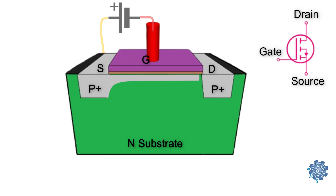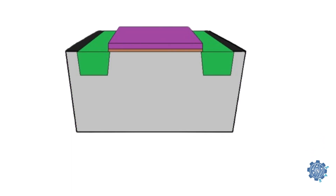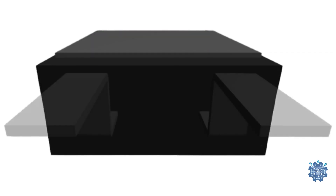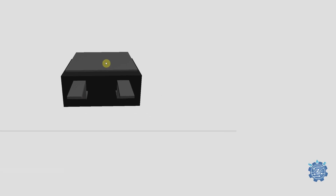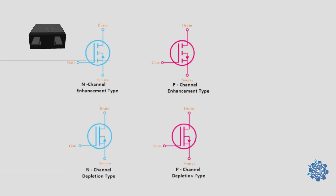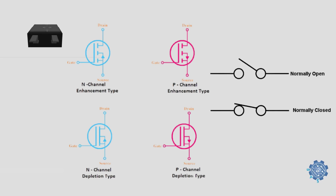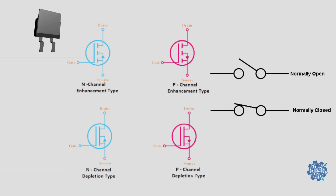What we discussed about until now was an enhancement mode device, called like that because increasing the gate voltage enhances the conductivity of the channel, unlike other MOSFETs that are designed to naturally have a conductive channel and a negative voltage is needed to actively turn them off. In depletion mode, the transistor requires the gate source voltage to switch the device off — the depletion mode MOSFET is equivalent to a normally closed switch. In enhancement mode, the transistor requires a gate source voltage to switch the device on — the enhancement mode MOSFET is equivalent to a normally open switch.